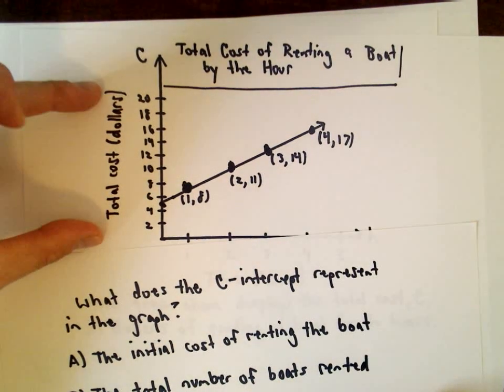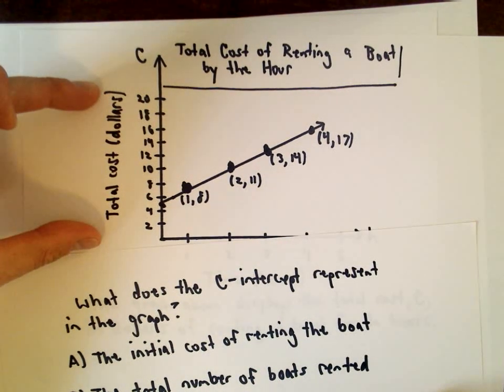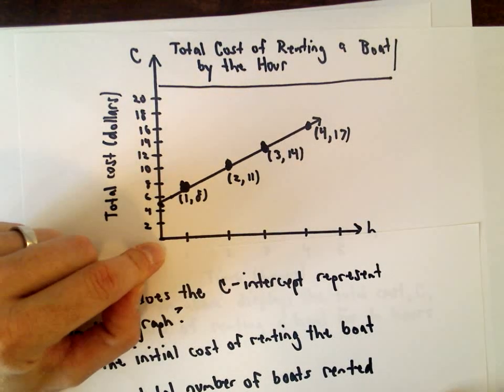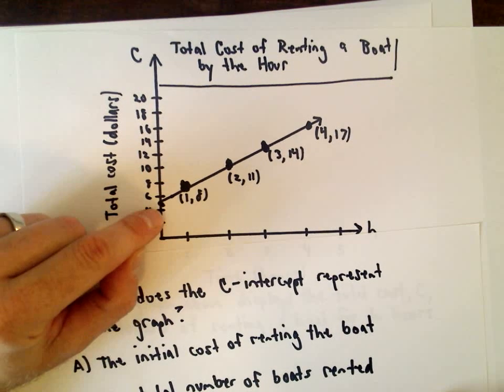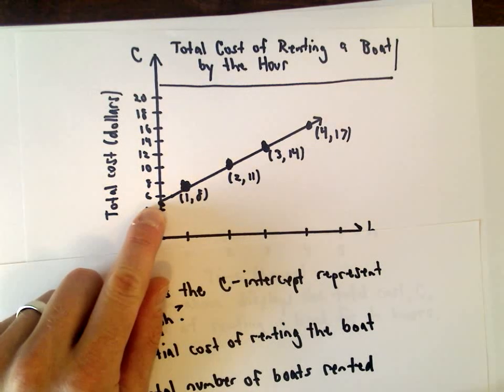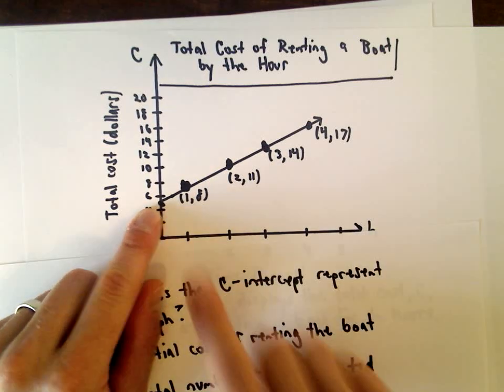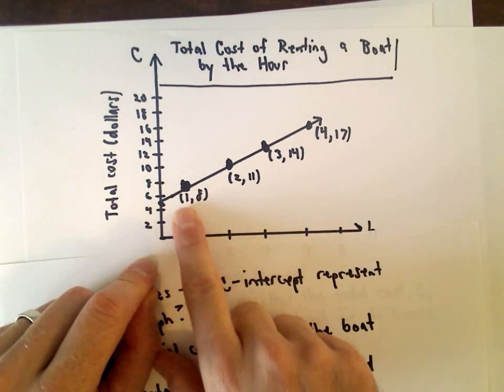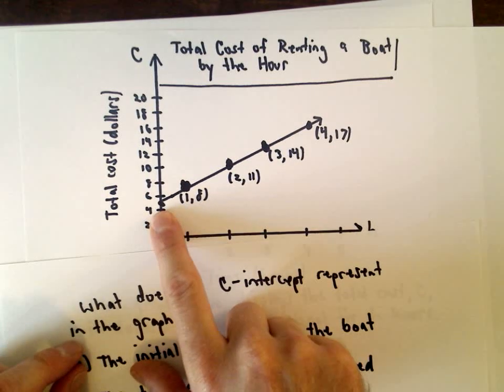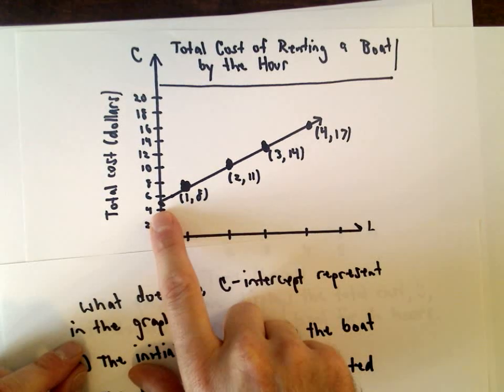It tells us that the vertical axis represents the total cost in dollars. So the idea is if you rent a boat for zero hours, maybe you have plans to go and you don't get out there, it's still going to cost you five dollars. After being on the boat for one hour, it's jumped up to eight dollars.